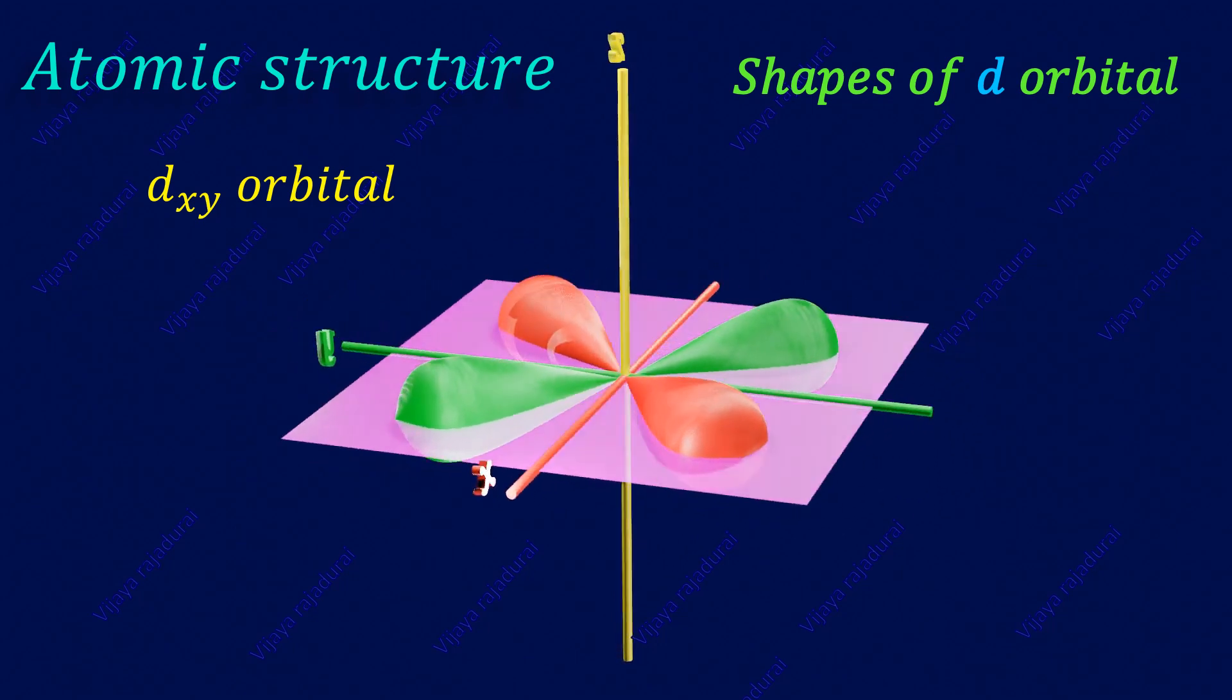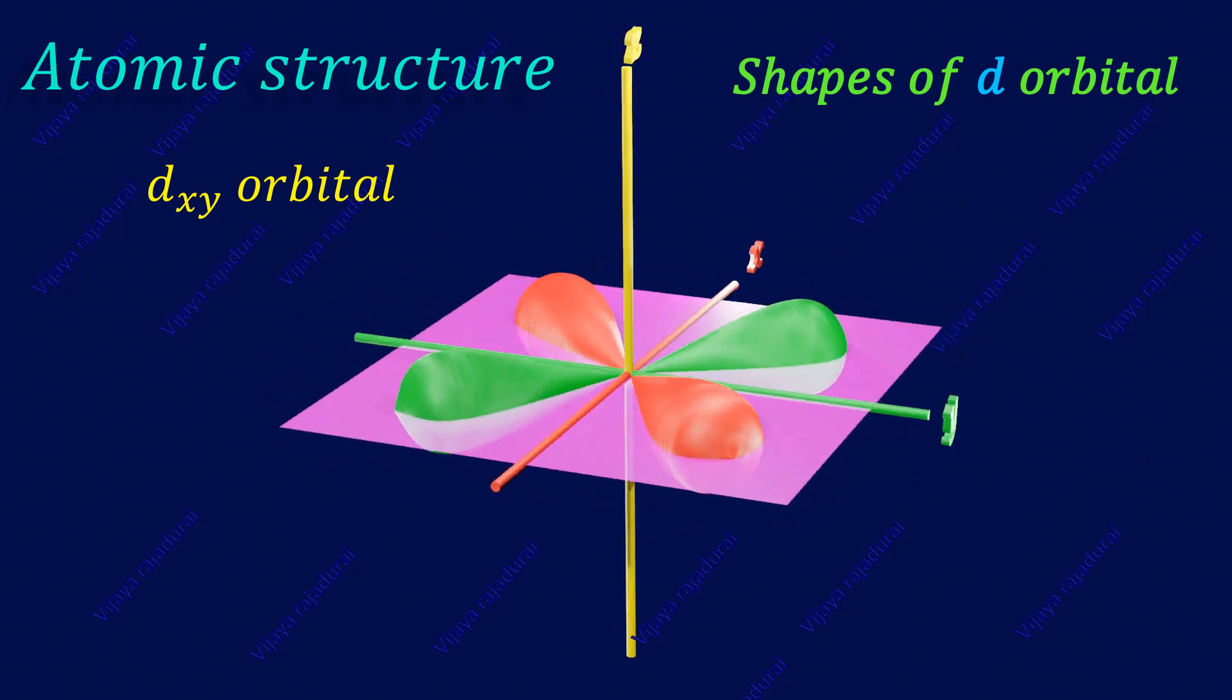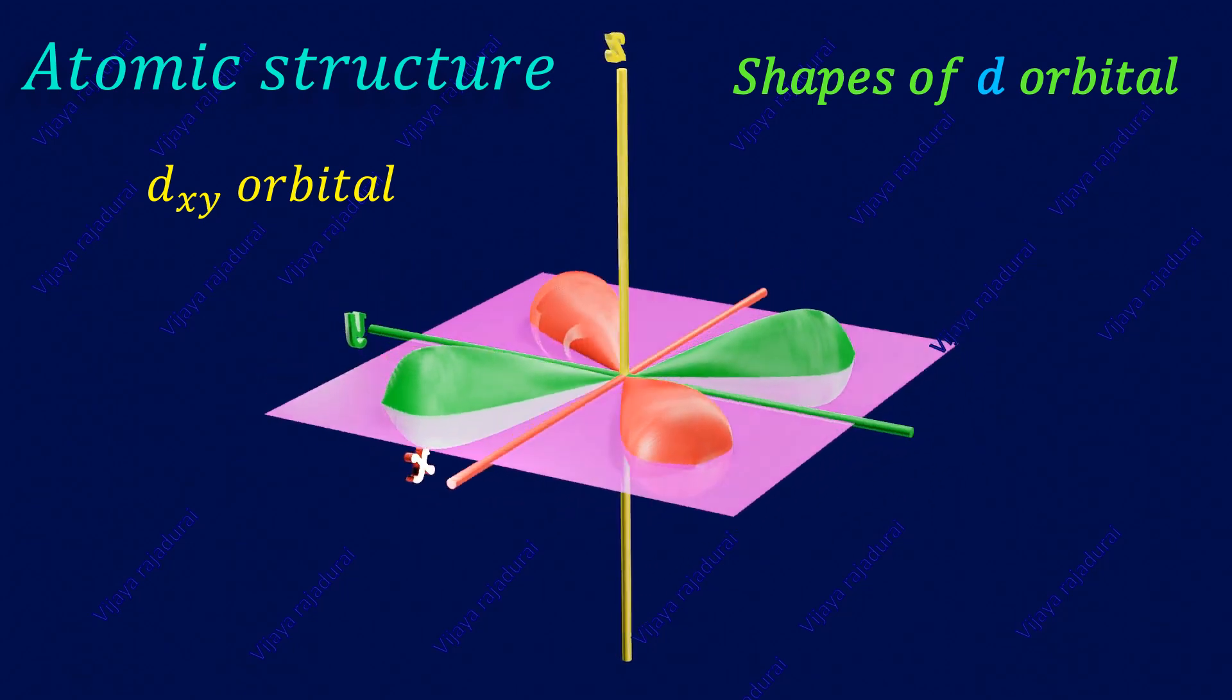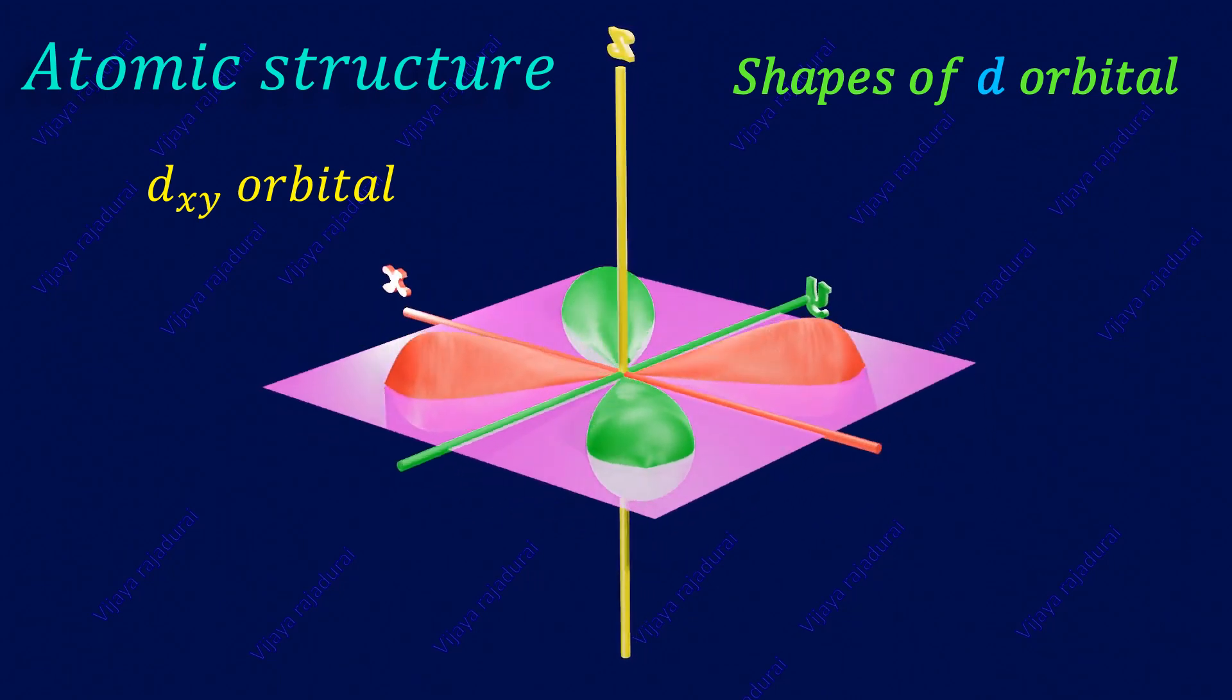In the dxy orbital, the lobe is oriented in between the x and y axis.